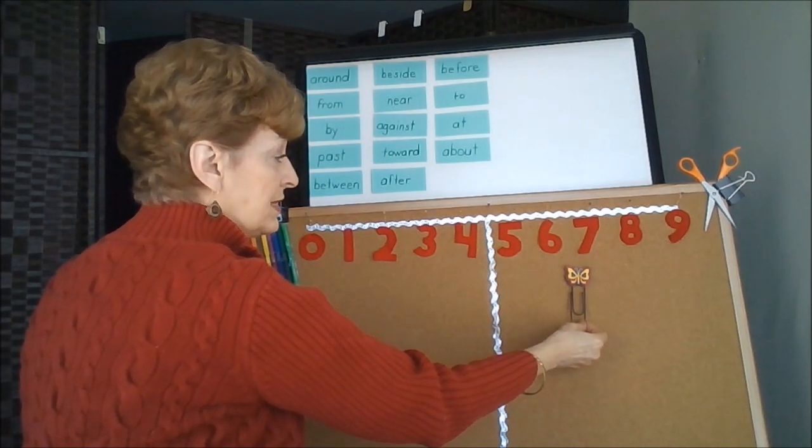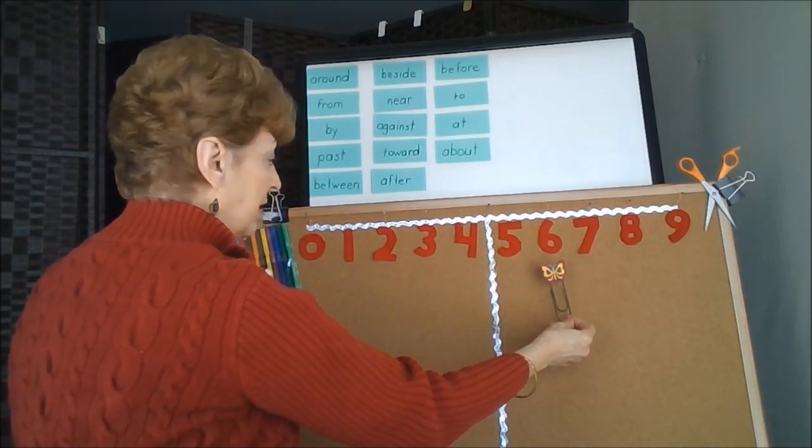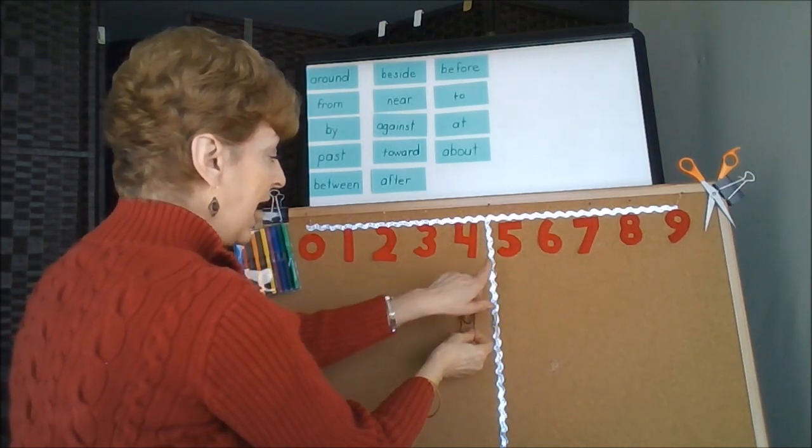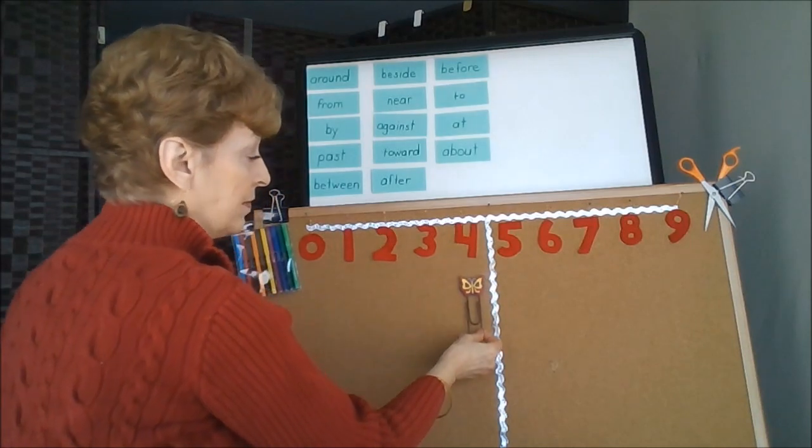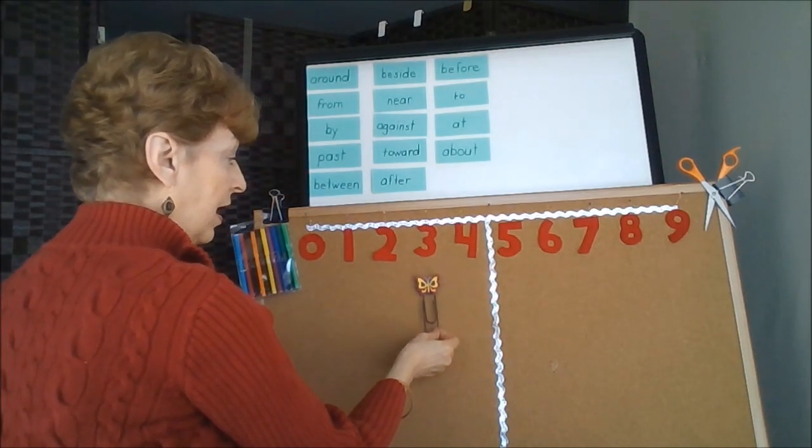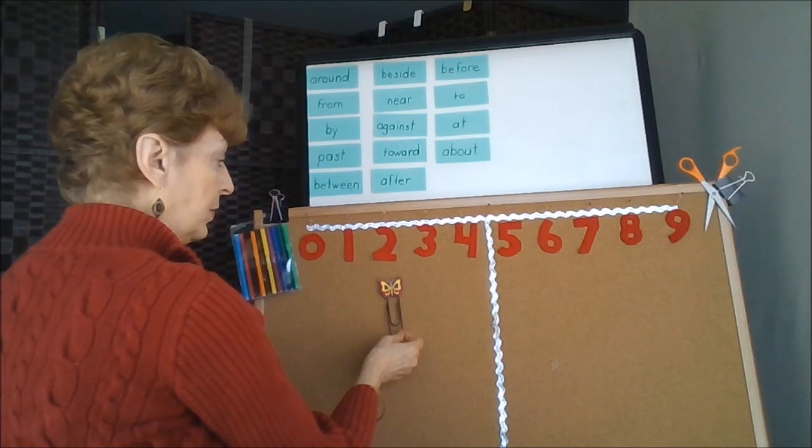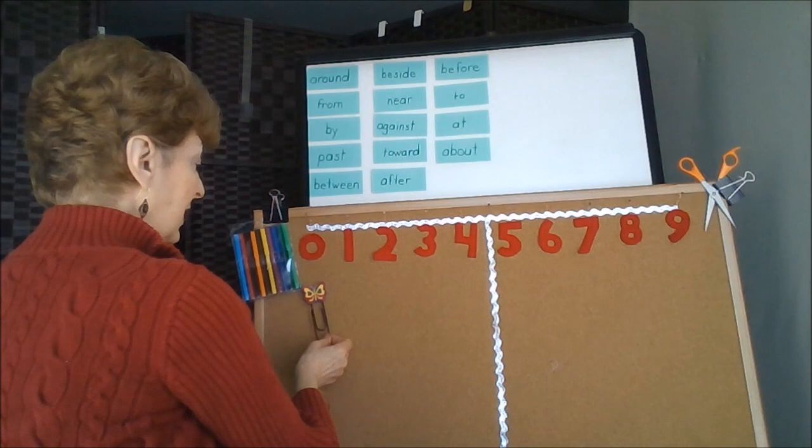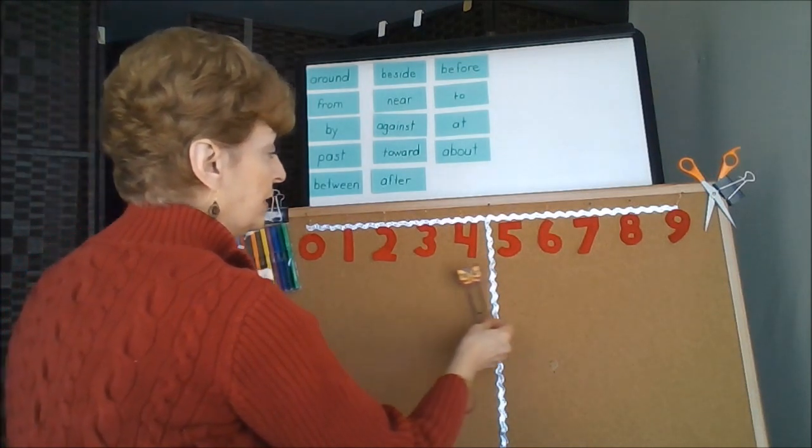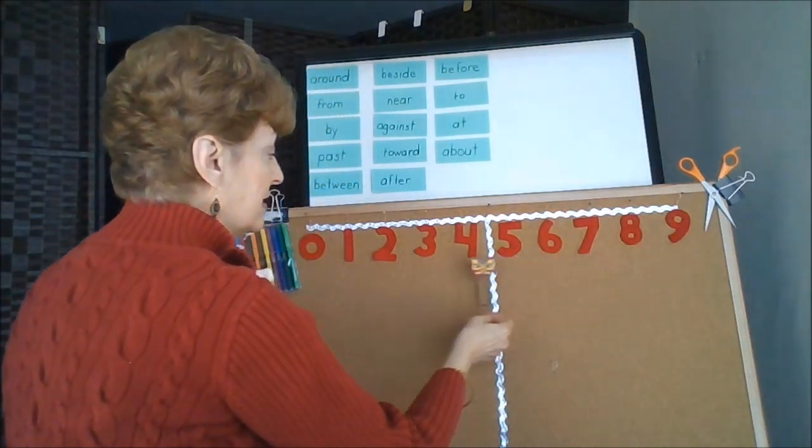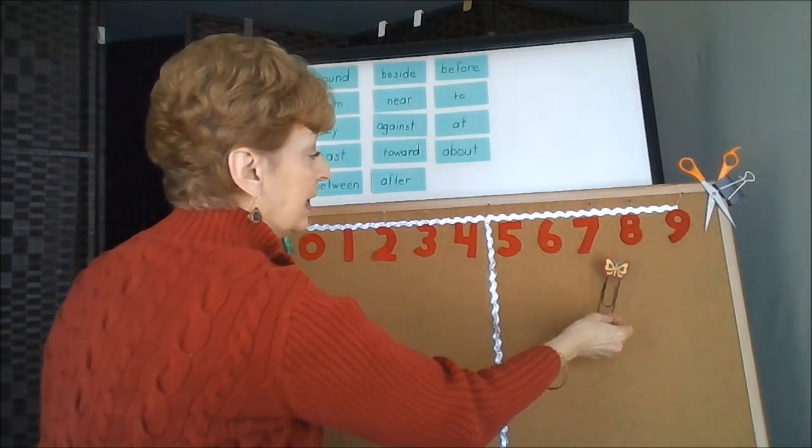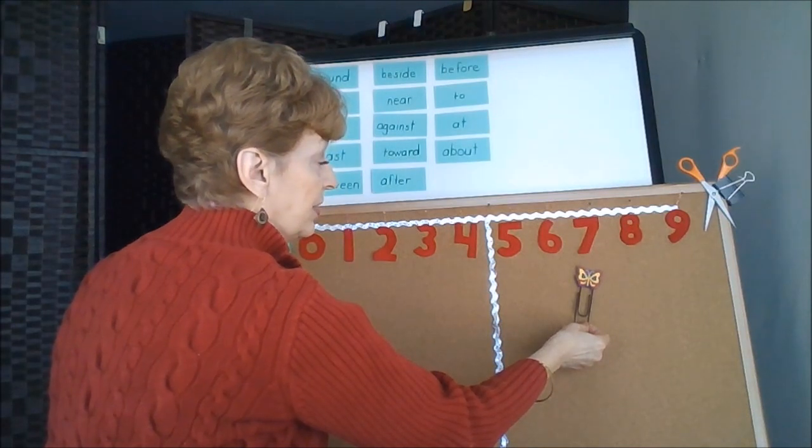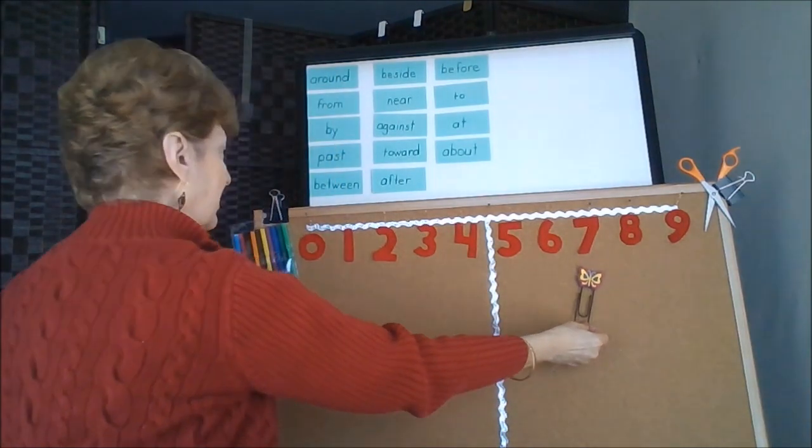If the butterfly was to fly toward the markers, he would have to keep on flying until he passed this halfway mark and landed on either a 4, a 3, a 2, a 1, or the 0 digit. The butterfly is still between the scissors and the markers, but wherever he lands, if he's closer to the scissors than the markers.